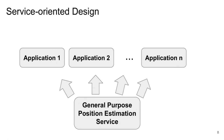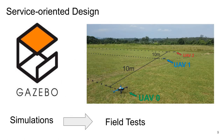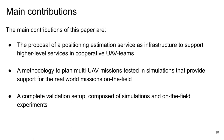To evaluate the method, a simulation is performed in ROS and Gazebo environments to set up and test a cooperative mission. After that, on-the-field experiments are performed following the setups previously tested in the simulations. The main contributions of this paper are: the proposal of a positioning estimation services infrastructure to support higher-level services in cooperative UAV teams; a methodology to plan multi-UAV missions tested in simulations providing support for real-world missions on the field; and a complete validation setup composed of simulations and on-the-field experiments.